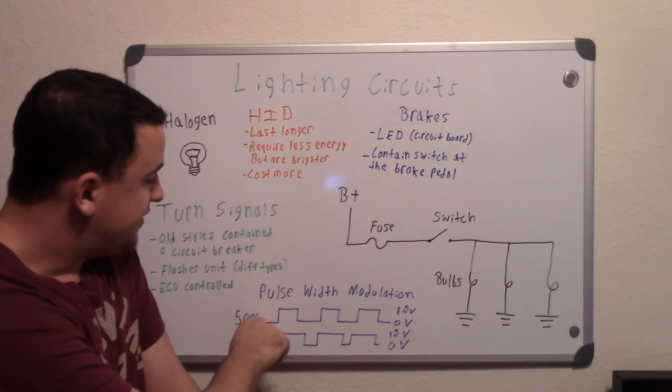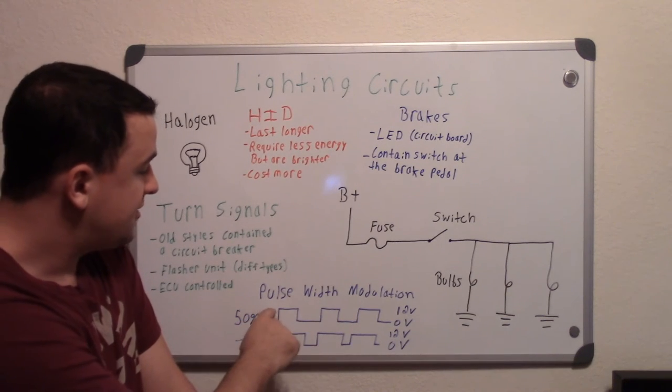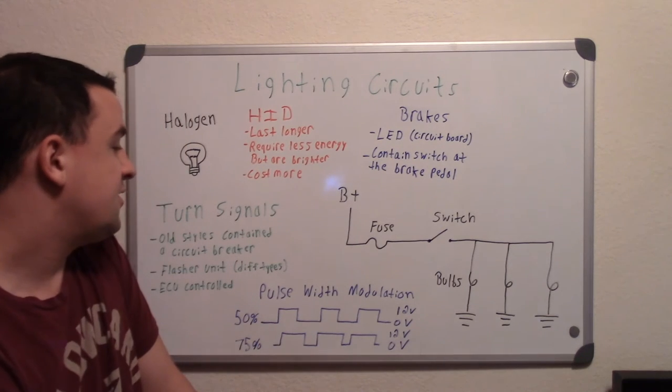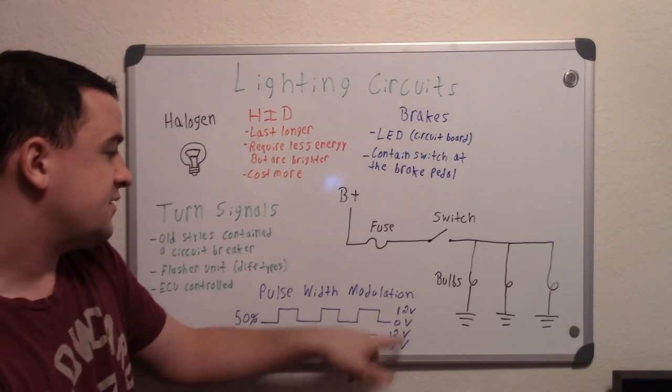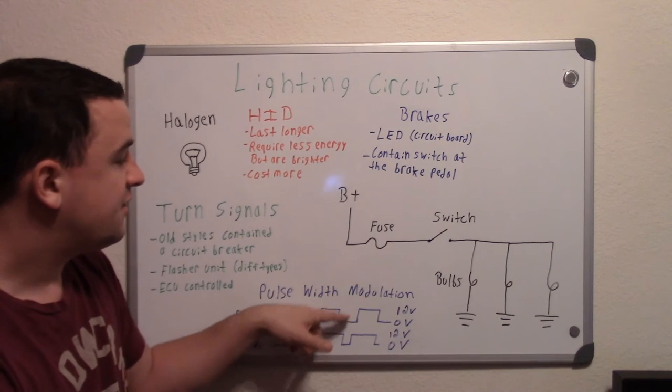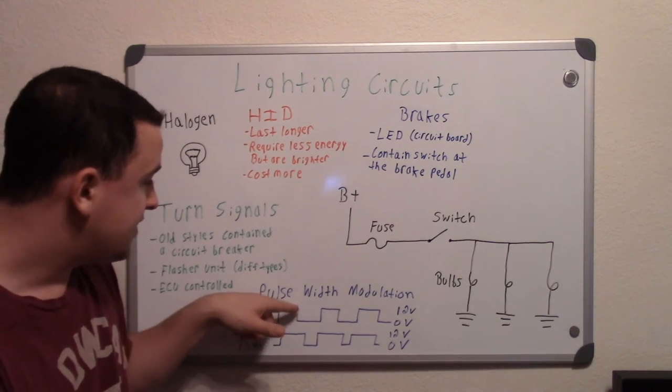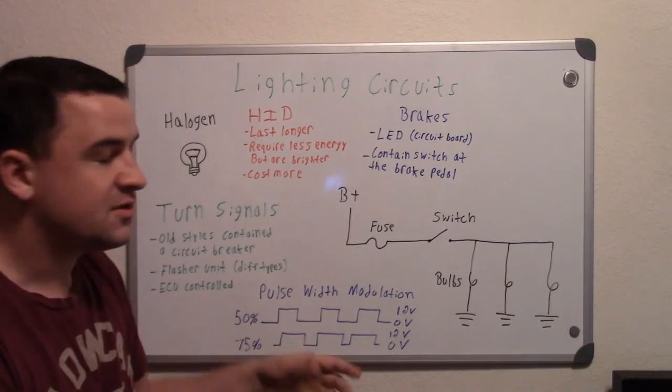This up here is your DC volts, so up here is your on and then straight down here is your off. So as you see 12 volts versus 0 volts, so it's either on or off, on or off. And as you can see the on time is almost the same as the off time, so that's 50%.